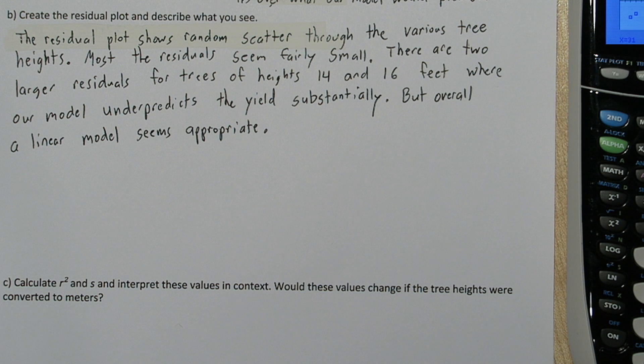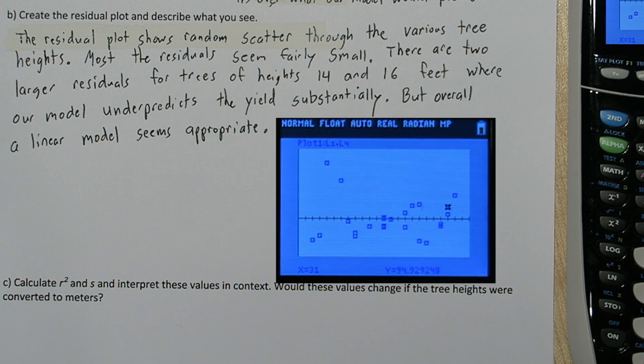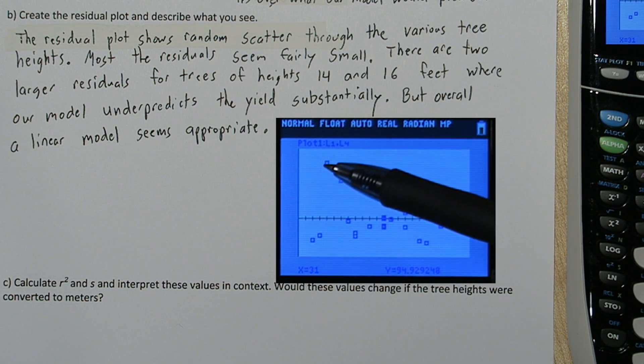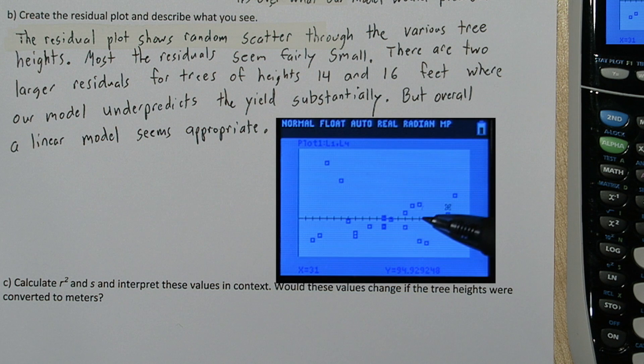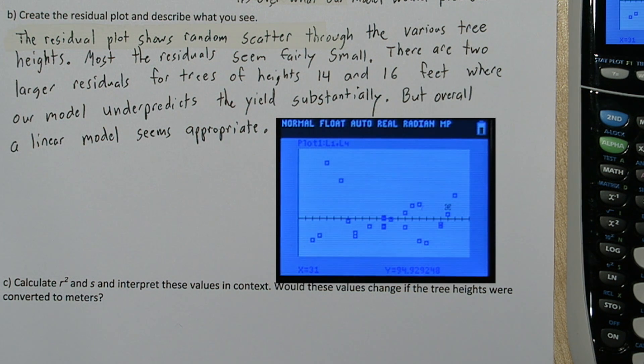So for our description, I'm going to say the residual plot shows random scatter through the various tree heights. When we look at the residual plot, the scatter seems random. And the x-axis is our tree heights, and I don't see the residuals either increasing or decreasing as tree height increases or decreases. So it's a random scatter. That's a good sign. Another good sign is most our residuals seem fairly small. With the exception of these two right here, most of the residuals are pretty close to the line. That means our model gets fairly close to predicting the actual yield.